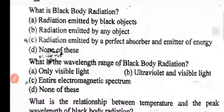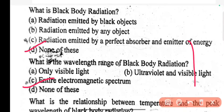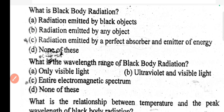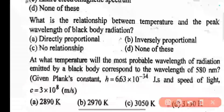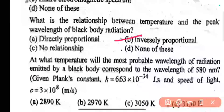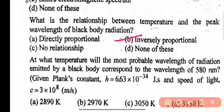The next important question is: what is black body radiation? The correct answer is C. What is the wavelength range of black body radiation? The correct answer is B. At what temperature will the most probable wavelength of radiation emitted by a black body correspond to a wavelength of 580 nanometers? The correct answer is D.